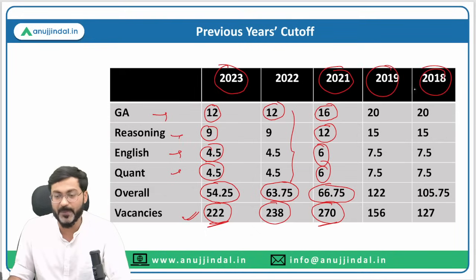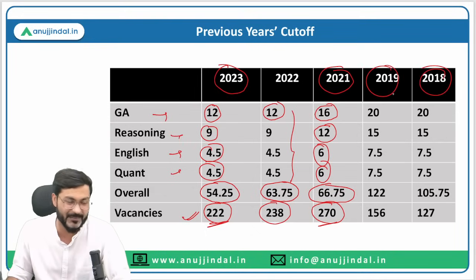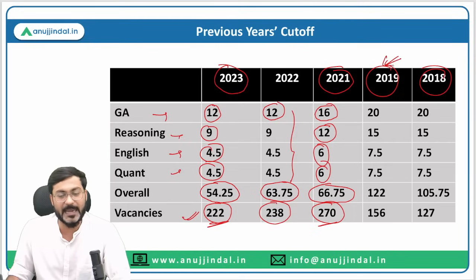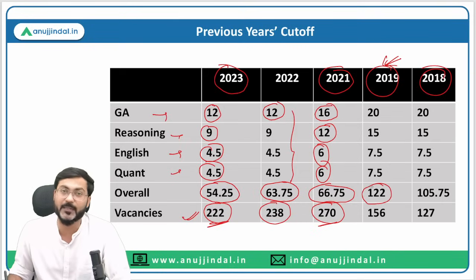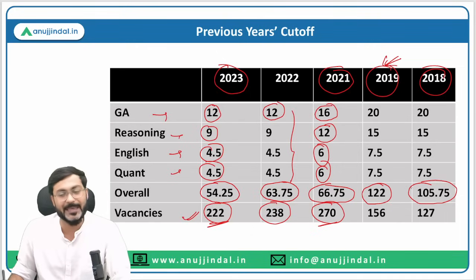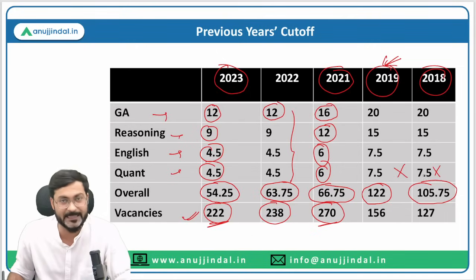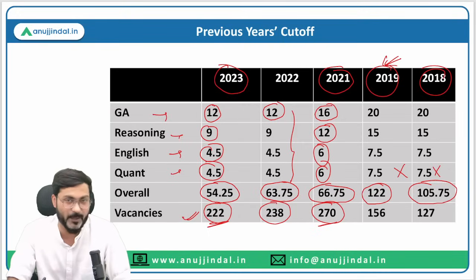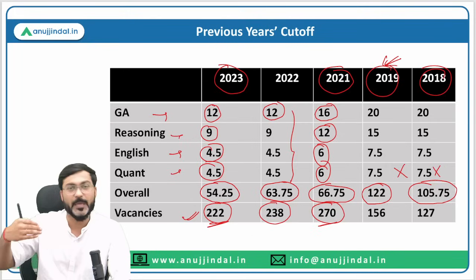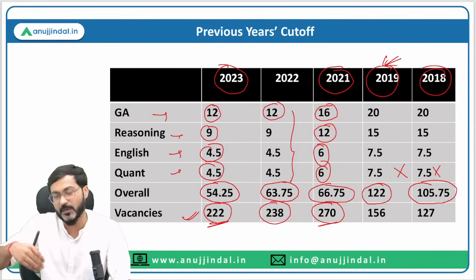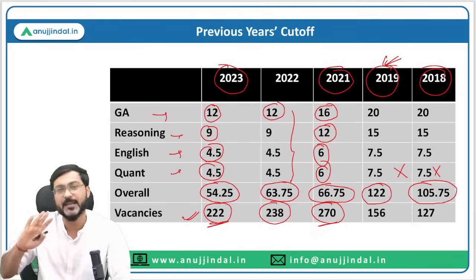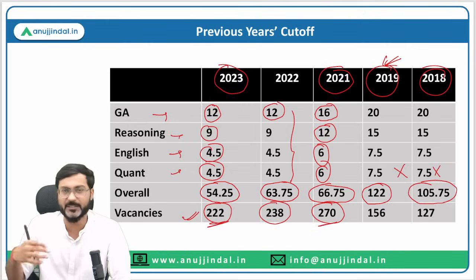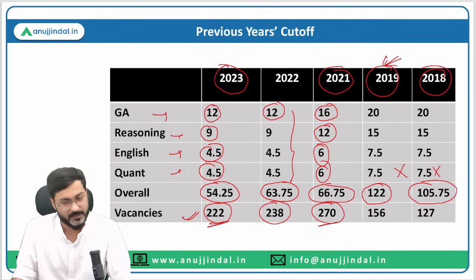You don't need to focus too much on 2019 and 2018 because the level of paper was very easy back then. In 2019, the overall cutoff was 122, and in 2018 it was 105.75. Looking at recent paper trends, we need not focus much on those years, though they could still be useful if the 2024 paper returns to that level of difficulty — which we can't rule out.